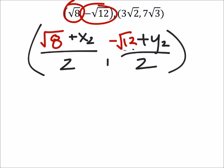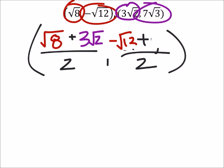Now these look pretty bad right now, we'll see if we can simplify these. x2 I will replace with what I call my x2, 3 root 2. And this will be my y2, which is 7 square root of 3.